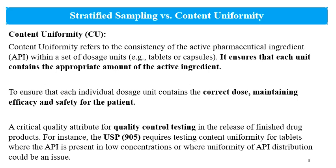CU is a critical quality attribute for quality control testing and for the release of finished products to the market. For example, USP Chapter 905 provides information for CU and requires testing Content Uniformity for tablets where the API is present at low concentration or where uniformity of API distribution could be an issue. Stratified Sampling and Content Uniformity are especially critical for low-dose formulations and formulations containing narrow therapeutic index drugs.